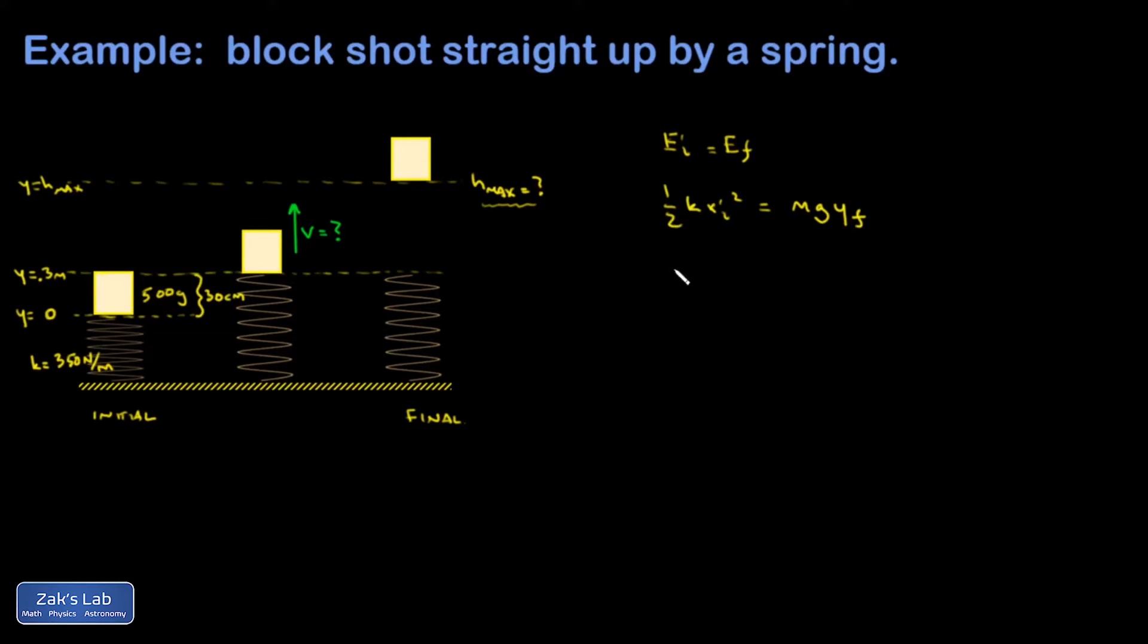Well, then I can solve for y final. So I've got kx initial squared over 2 mg, and I'm going to plug in my numbers, 350 for the spring constant. Converting to SI units, my 30 centimeter compression is 0.3 meters, and I've got to square that over 2 times the mass.